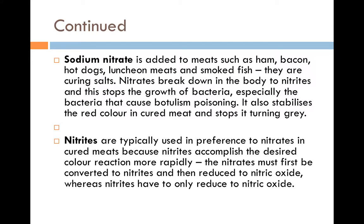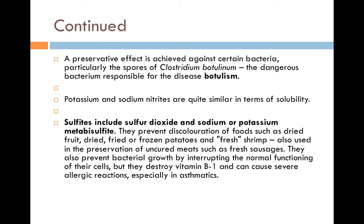Highlight the words sodium nitrite and nitrates. Sodium nitrate is used in curing meats — they are curing salts. Nitrites are typically used in preference to nitrates because they accomplish the curing a lot quicker; the reaction takes less time for the salts to cure the meat. These are used to prevent the growth of bacteria such as Clostridium botulinum, which causes the disease botulism. Sulfites include sulfur dioxide and sodium or potassium metabisulfite. They prevent discoloration of foods such as dried fruit, frozen potatoes, and seafood.